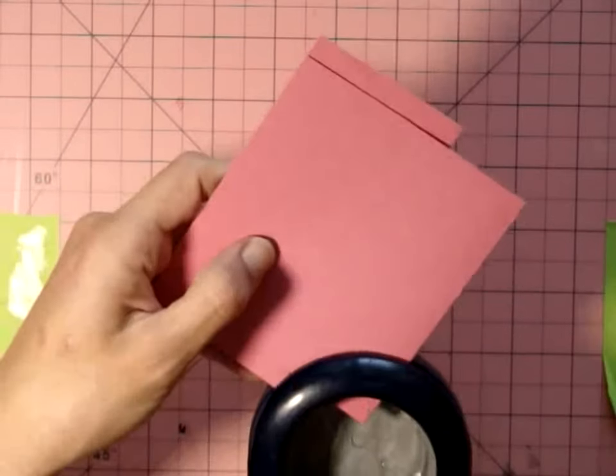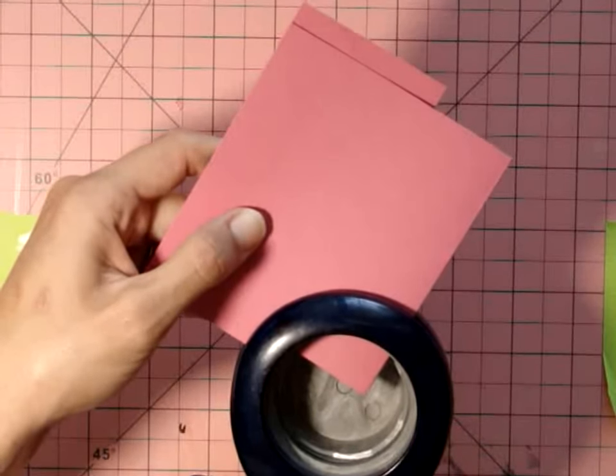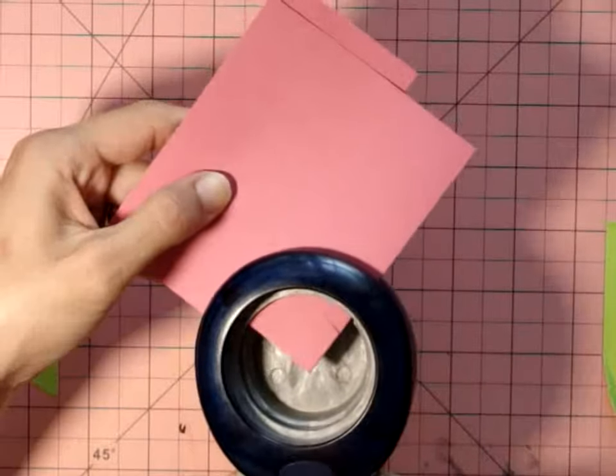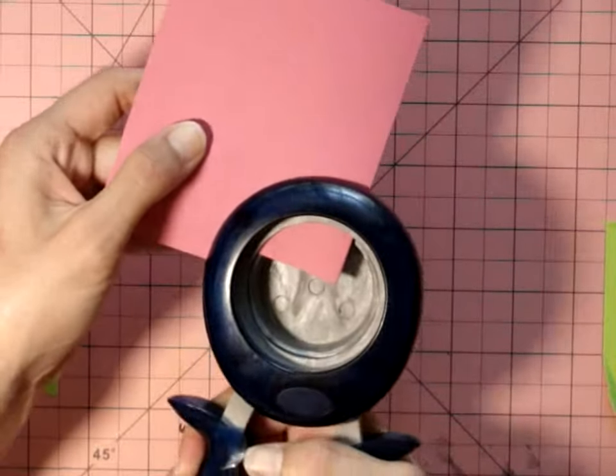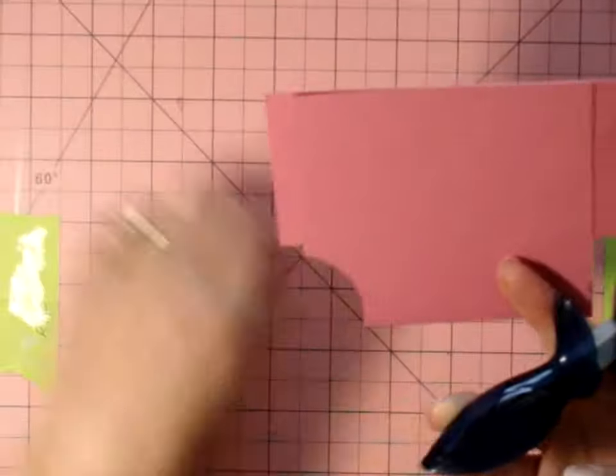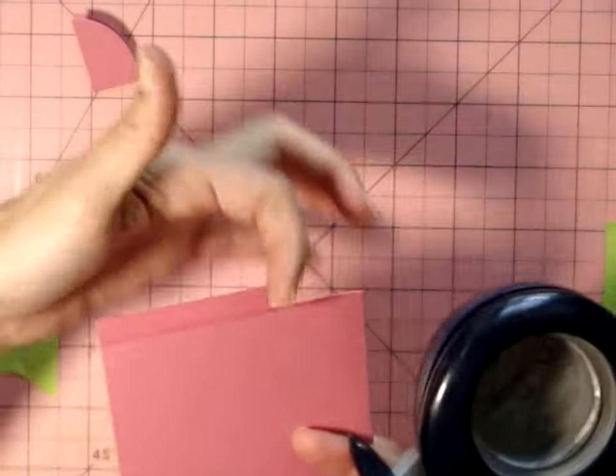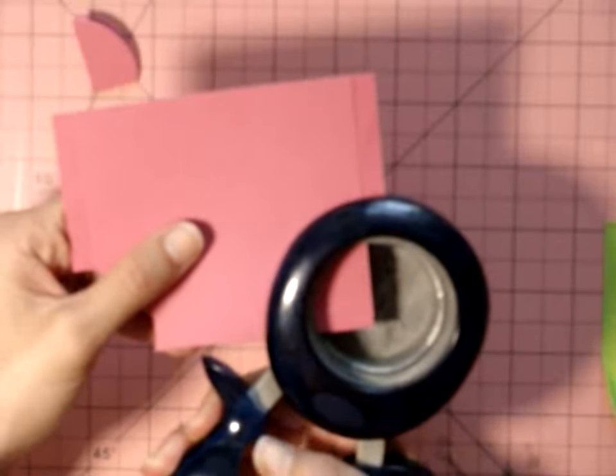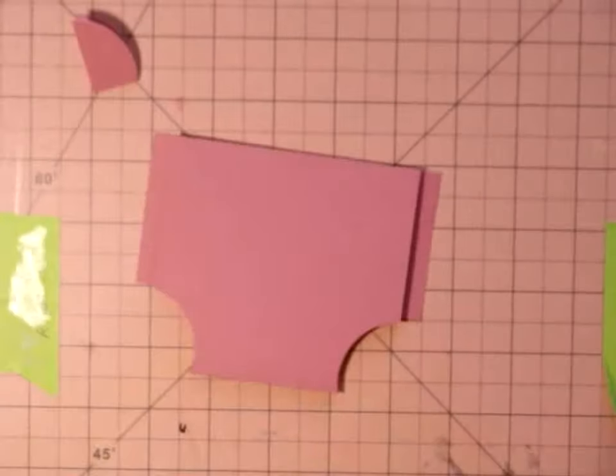Now we're going to punch out the leg holes. I usually just kind of go in where it feels right the first time, and then I use that as a template for all the other diapers where I will just trace in the line and then go over it so it can all be uniform.